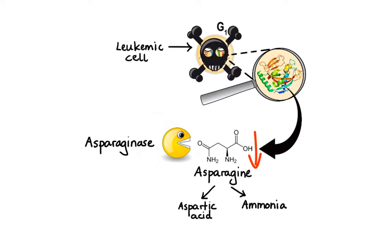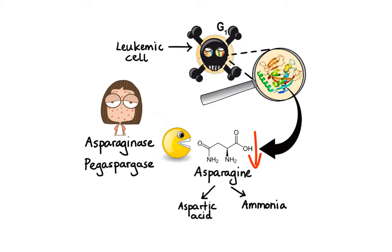For patients with acute lymphocytic leukemia who develop an allergy to asparaginase, there is a slightly changed version of the drug available called Pegasparagase, which is essentially asparaginase linked to a polyethylene glycol molecule. In contrast to asparaginase, Pegasparagase is less likely to cause an allergic reaction, has a longer duration in the body, and can be given less frequently.